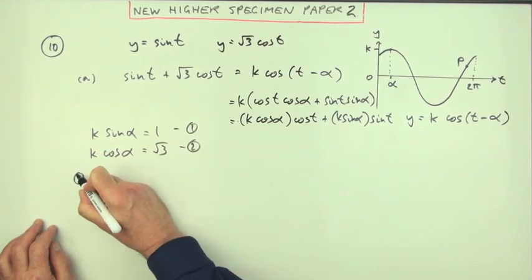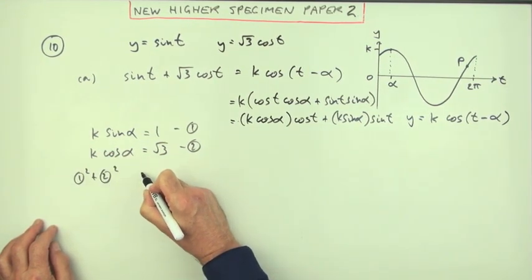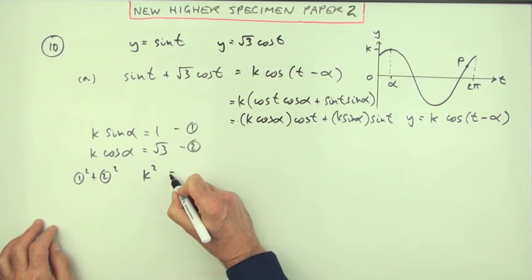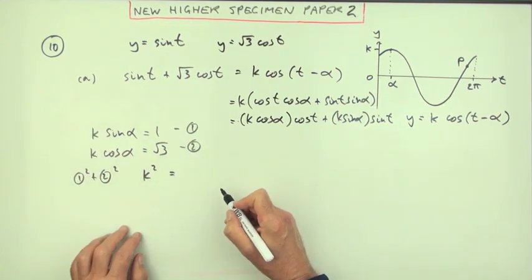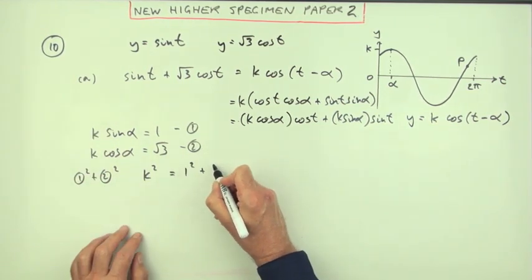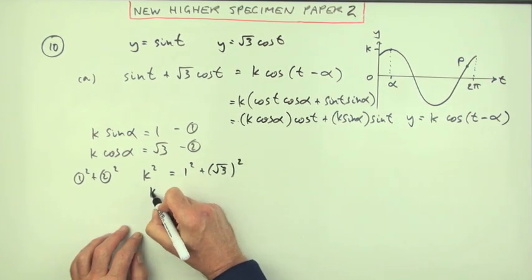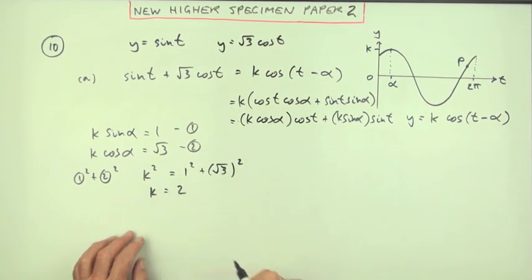How do we get k? If you square and add them, then you'll have k squared equals, because sine squared plus cos squared makes 1, 1 squared plus root 3 squared. But I'm just going to jump in now because I recognize the answer is 2.